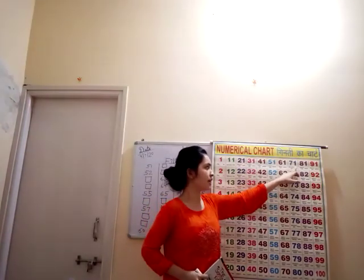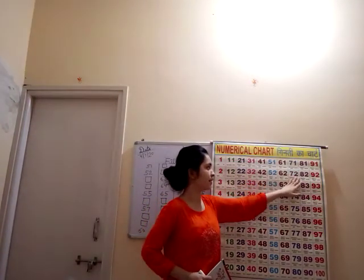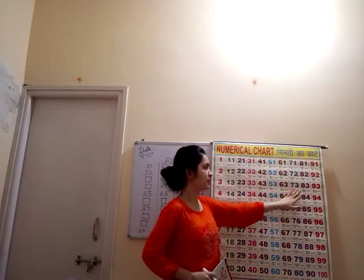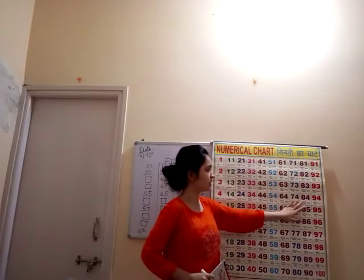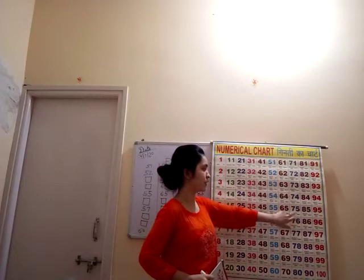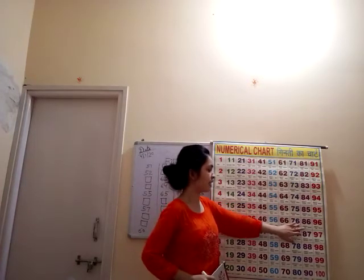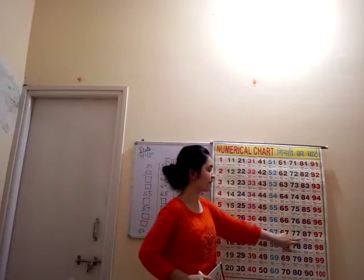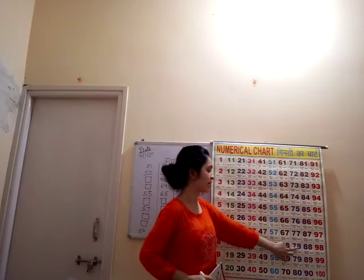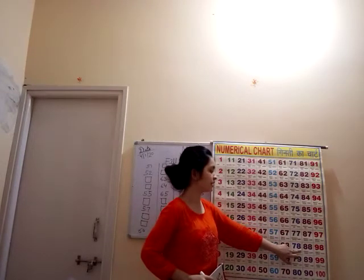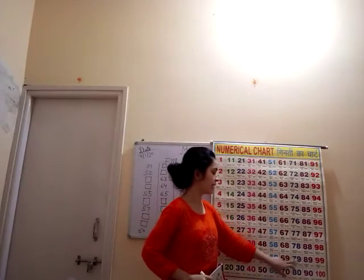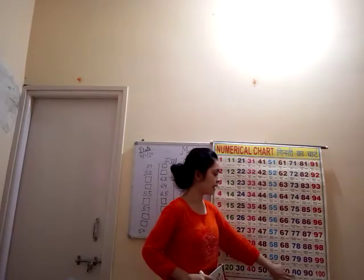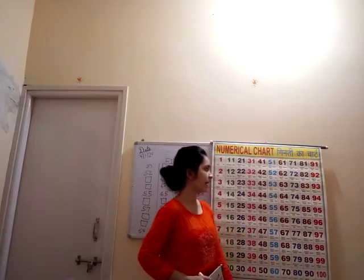7, 1, 71. 7, 2, 72. 7, 3, 73. 7, 4, 74. 7, 5, 75. 7, 6, 76. 7, 7, 77. 7, 8, 78. 7, 9, 79. 79 ke bad kya atar? 8, 0, 80.